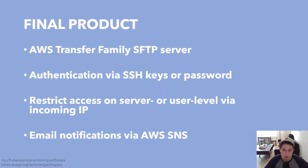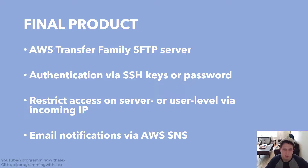With the final product of our video series, we're going to have an AWS Transfer Family SFTP server. We're going to allow authentication via SSH keys or password authentication. We're also going to restrict access at the server or user level via incoming IP. And finally, we're going to allow email notifications via AWS SNS, Simple Notification Service. This is very important when the client wants to know immediately when files are uploaded to the SFTP server — they will get an email notification alerting them that files have been uploaded. This is very helpful for the end client and commonplace in production-ready servers in any true corporation.